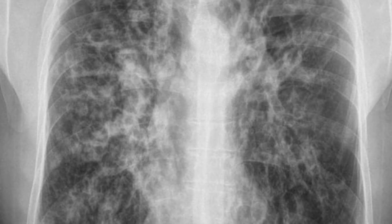We can see upper lobe predominant bronchial wall thickening with ring shadows and patches of consolidation. Here are some ring shadows. Ring shadows on chest x-ray are classically associated with cystic bronchiectasis.